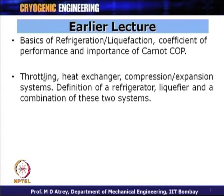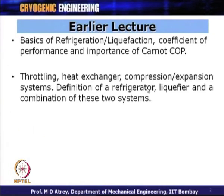We talked about various mechanisms to get lower and lower temperatures. These temperatures can be obtained by throttling mechanism, heat exchangers, or compression-expansion systems. We discussed all three possibilities, and that a complete system may be a combination of all these. We also talked about the definition of a refrigerator, a liquefier, and a combination of these two systems.